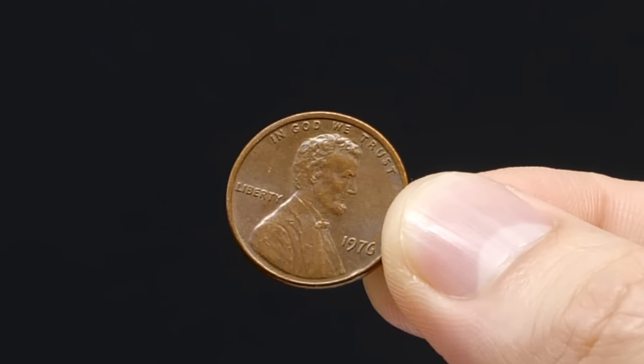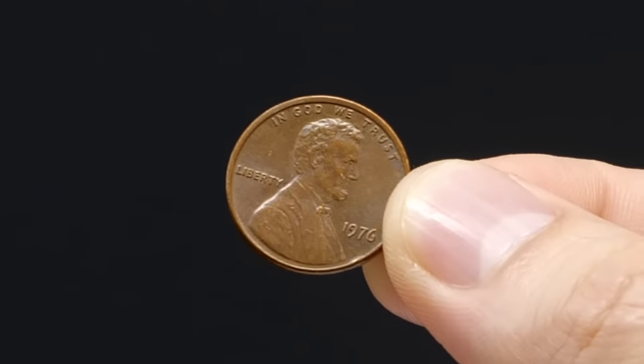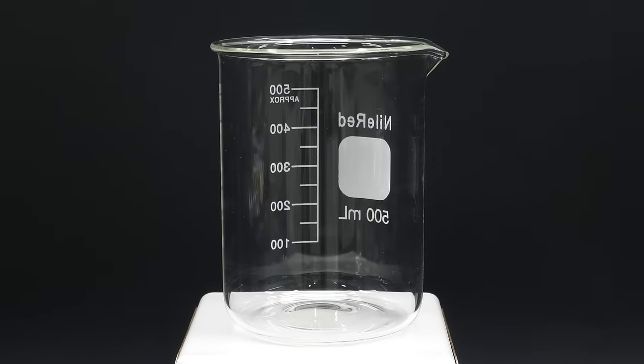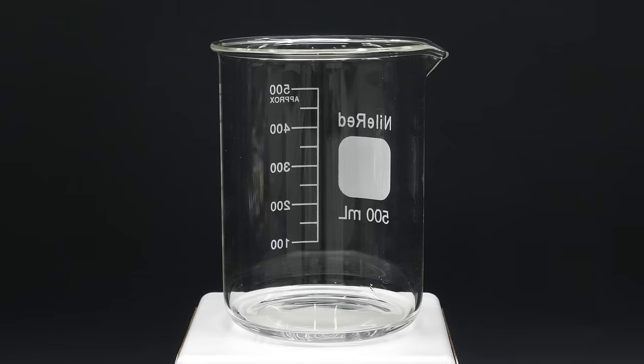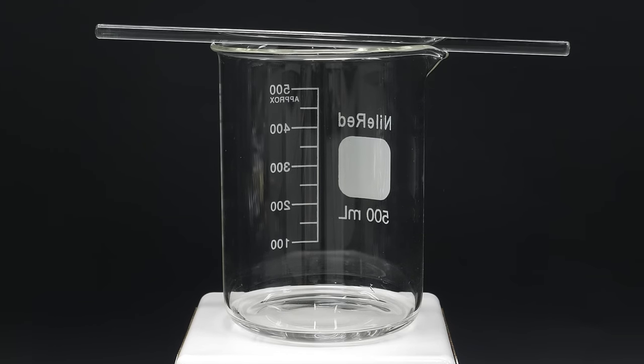Today, I'm going to be turning a penny into a lightbulb. The first step is to get a beaker and add some acetone. I'll also put a glass rod on top of it, and that's it for this part.